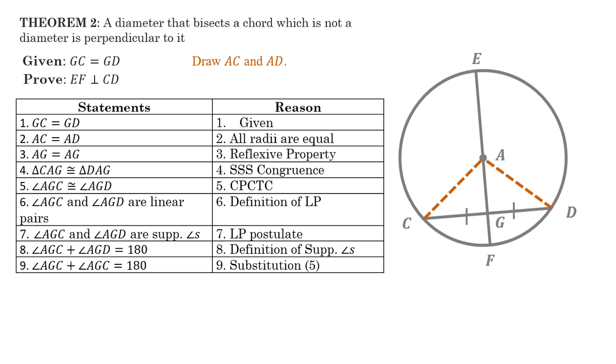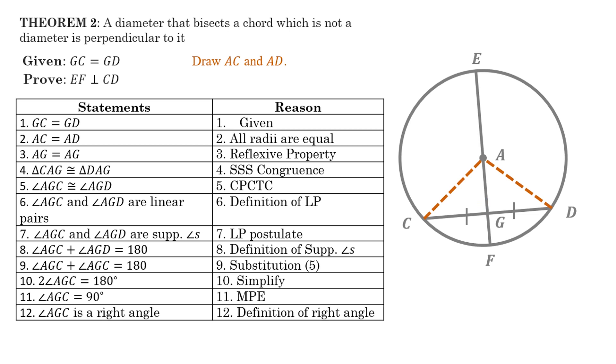And if you'll notice here, you can substitute. Remember that AGC is equal to AGD. Therefore, the AGD here can be replaced by AGC. And you can add them. So you'll have two angle AGC is equal to 180 degrees. And by dividing both sides by two, we'll get angle AGC equals 90 degrees. AGC is equal to 90 degrees, this one. And therefore, it forms a right angle. And EF is perpendicular to CD by definition.